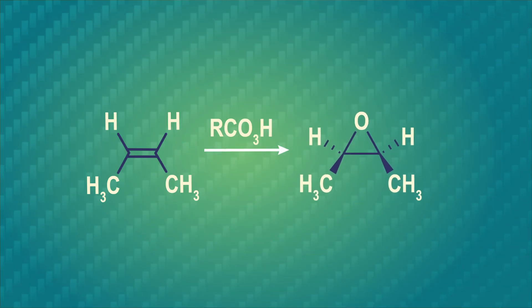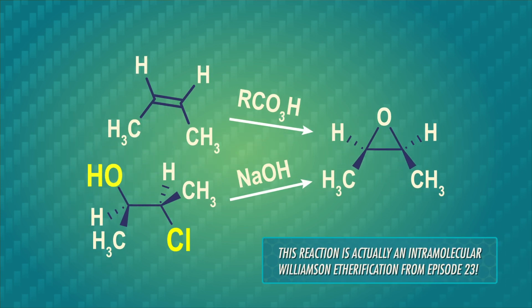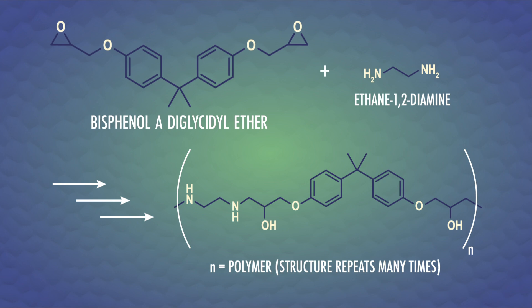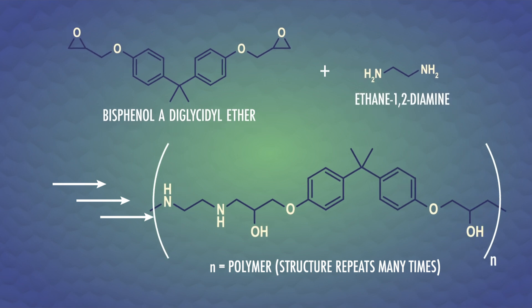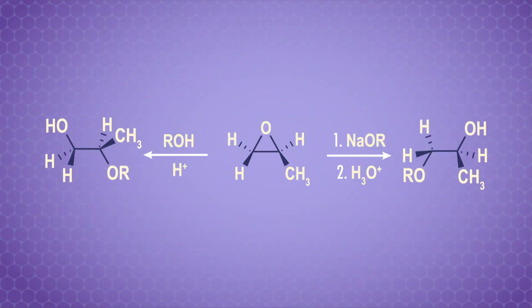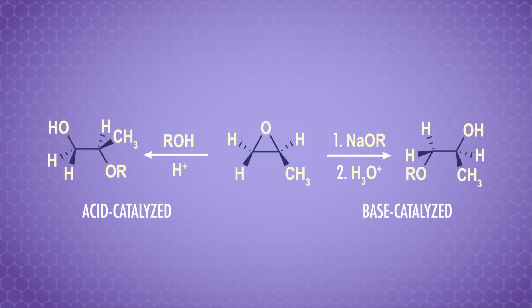We can also tweak the structure of alcohols to make epoxides, which are essentially cyclic ethers where the oxygen forms a three-atom ring with two carbon atoms. If epoxides sound familiar, that's because we've seen how to make them from alkenes. But we can also make them from halohydrins – compounds containing a halide and a hydroxyl group on adjacent carbon atoms. We come across epoxides in epoxy glues, where they react with amines to form an adhesive polymer. Epoxides are also important in organic synthesis because they're much more reactive than the very stable ethers.